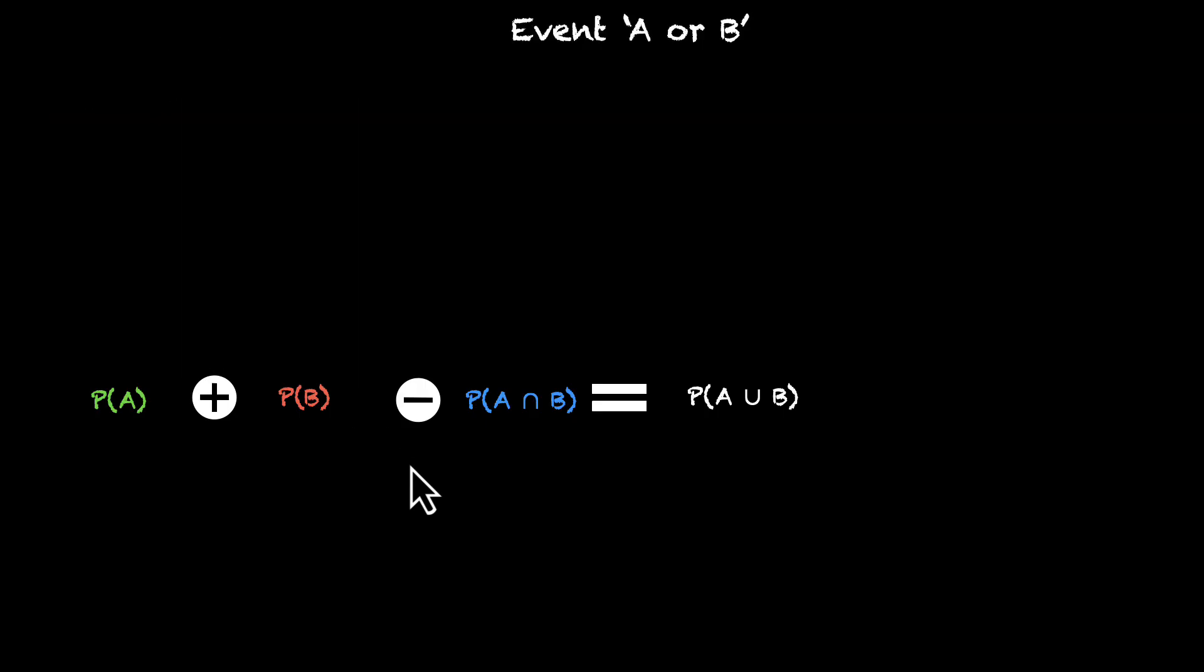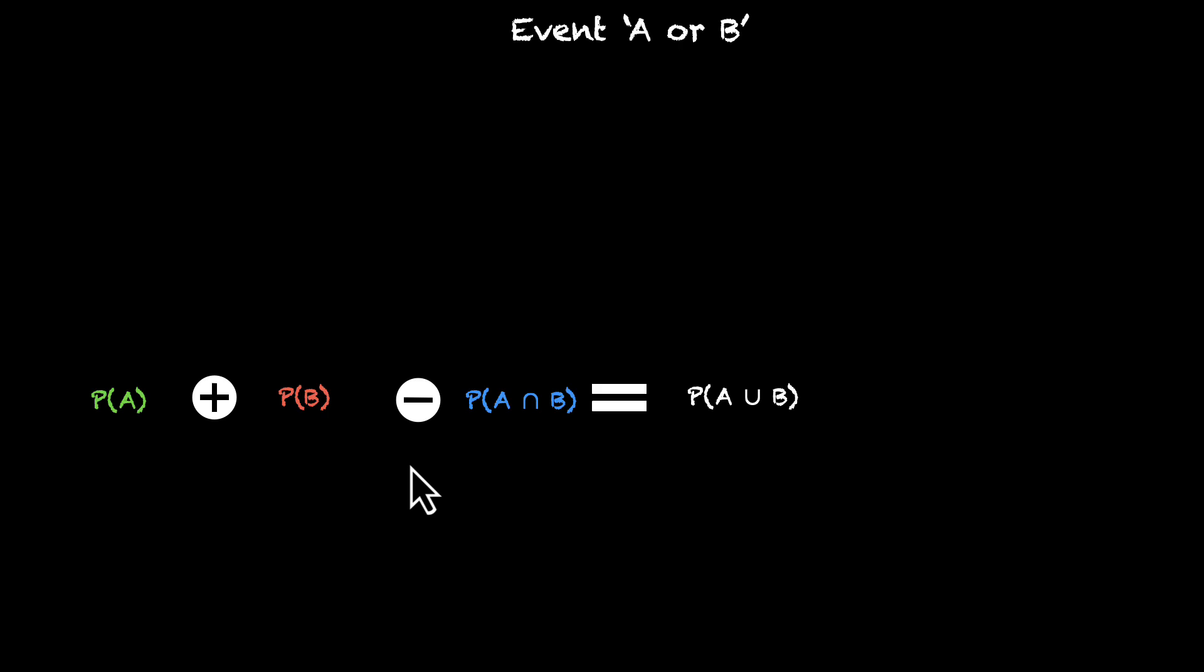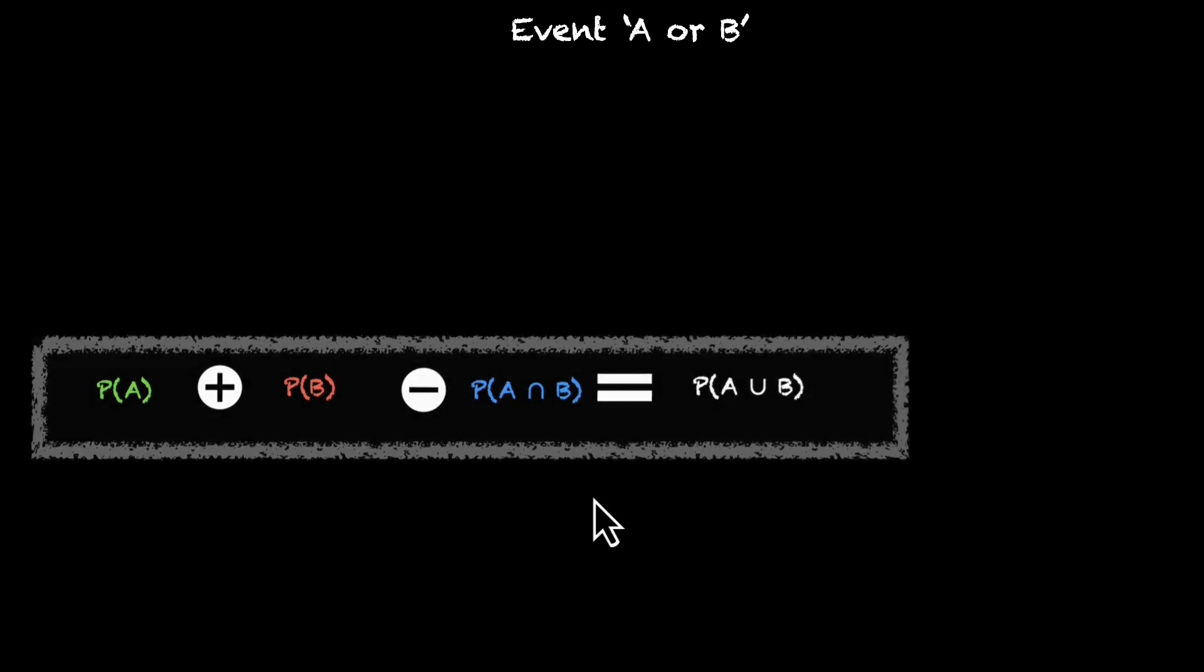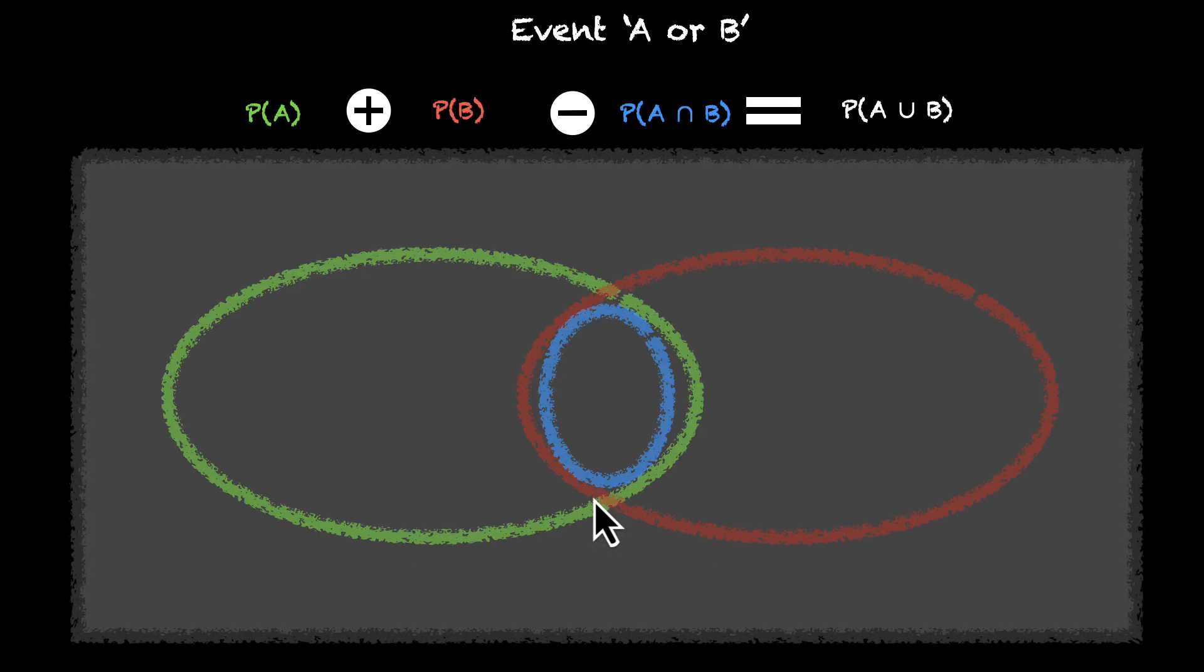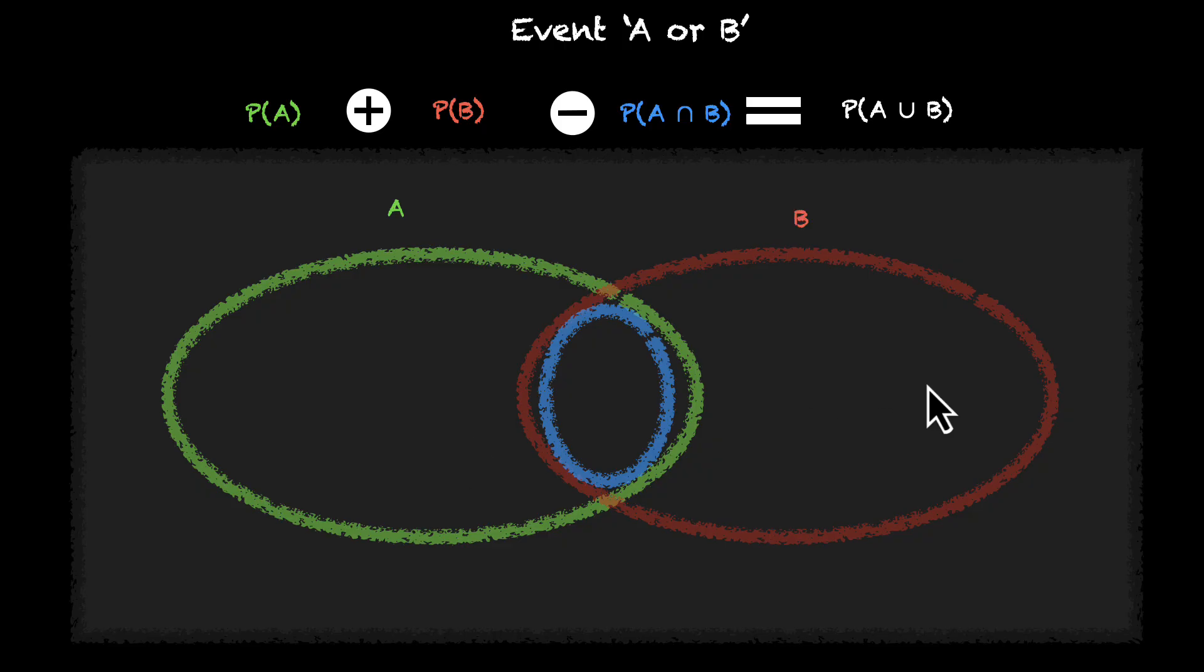Wow! We now have something that works for cases where we have overlaps. Now to get a better feel of this, let's visualize it. So this green gives us A, this red gives us B, and this blue zone gives us A intersection B.